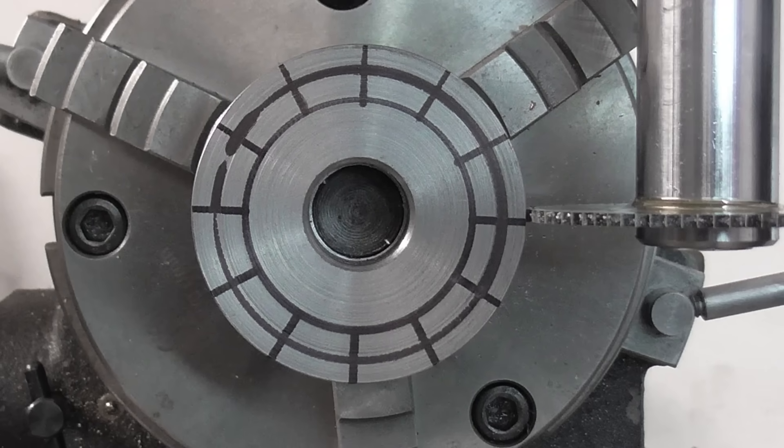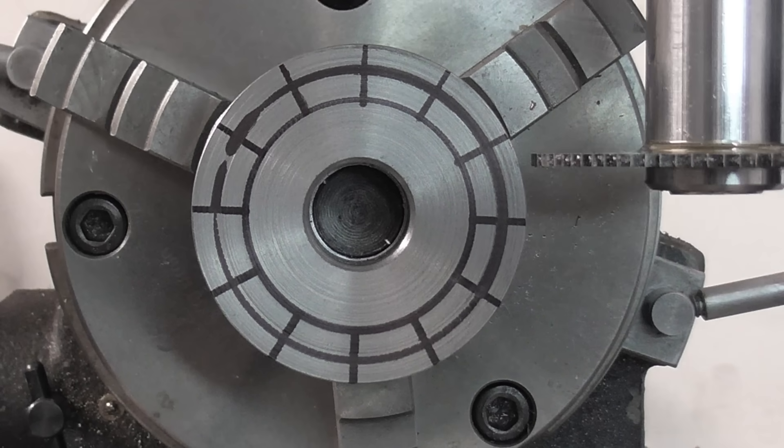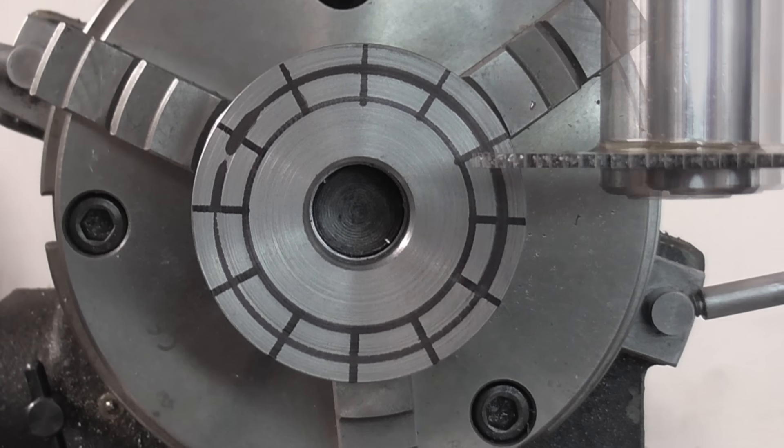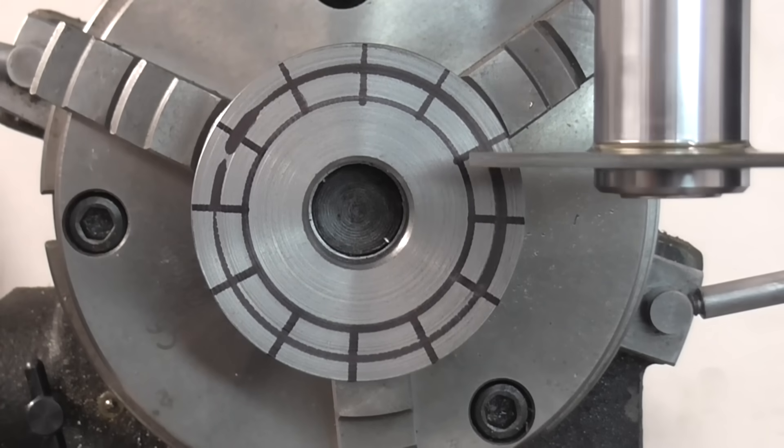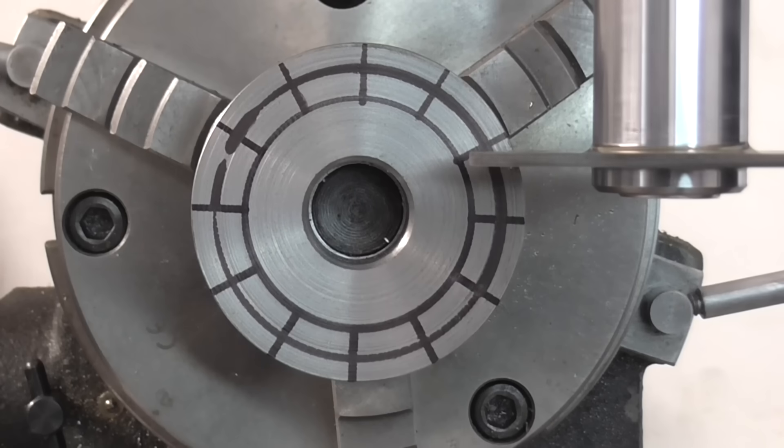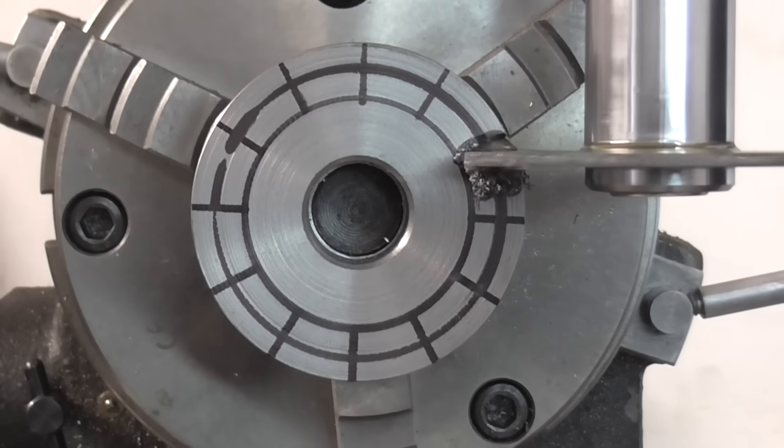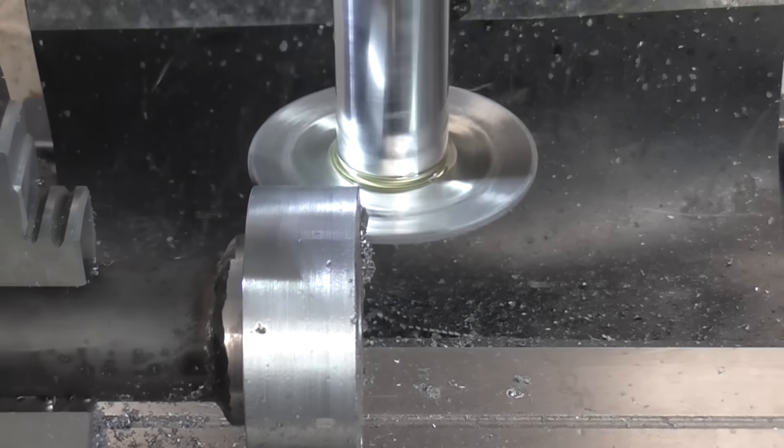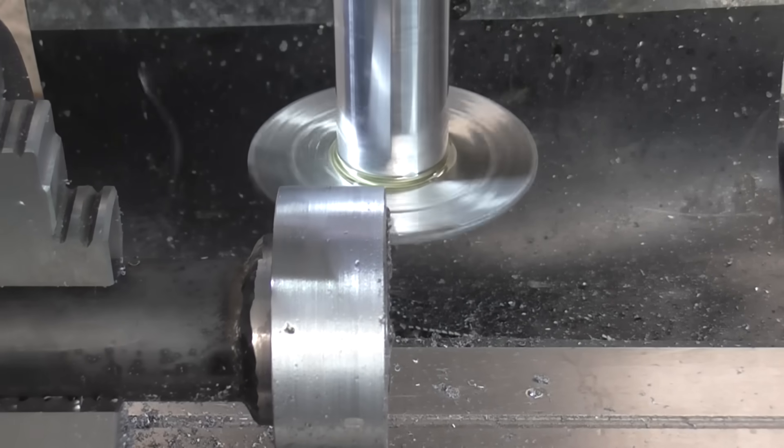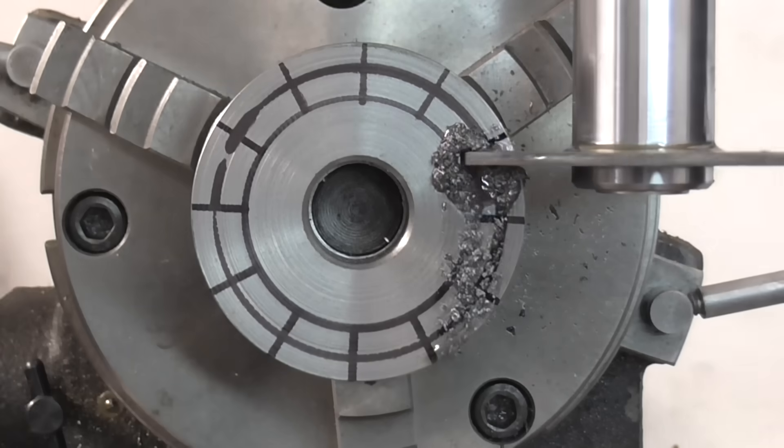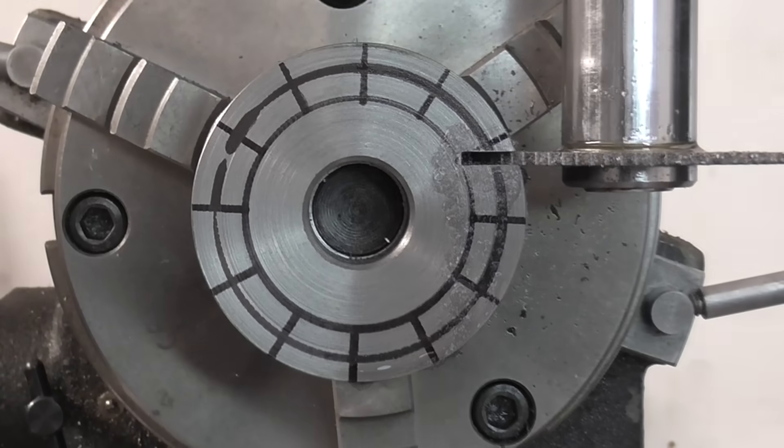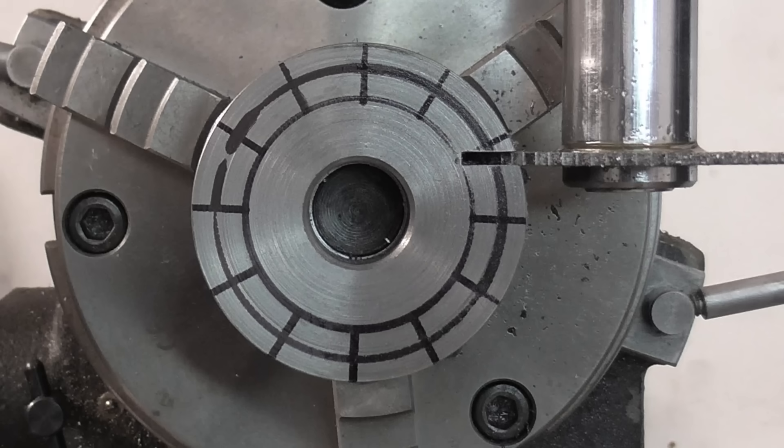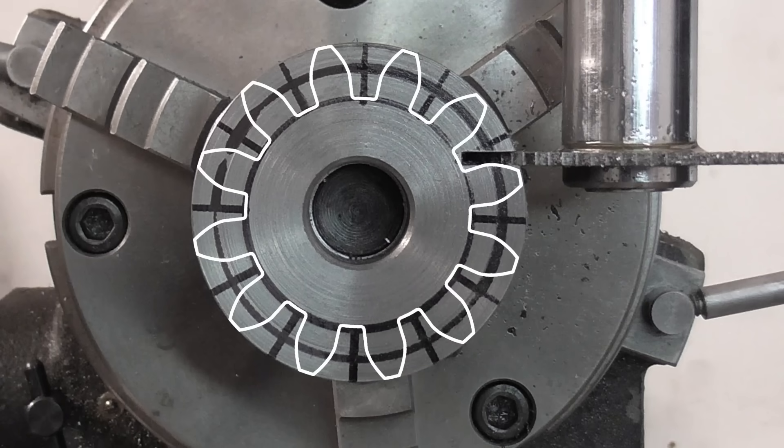Okay, so to take the first cut, I raise the saw 9.21 millimetres and feed it in 10.86 millimetres. Now I can repeat this cut for every tooth by rotating the blank 30 degrees each time.